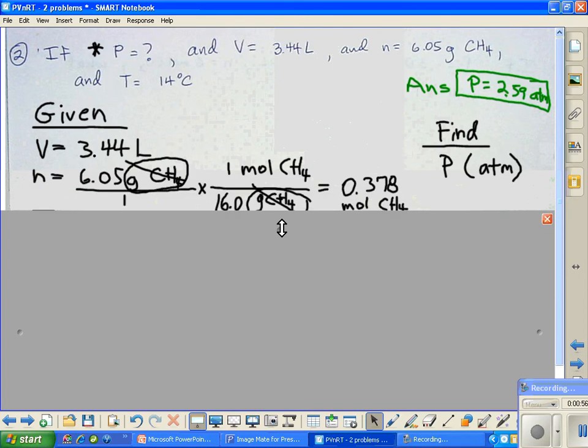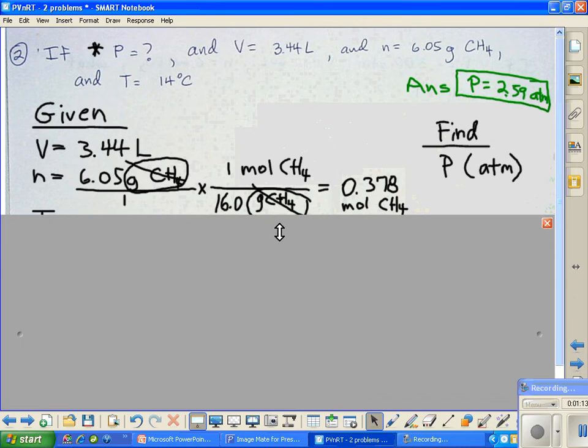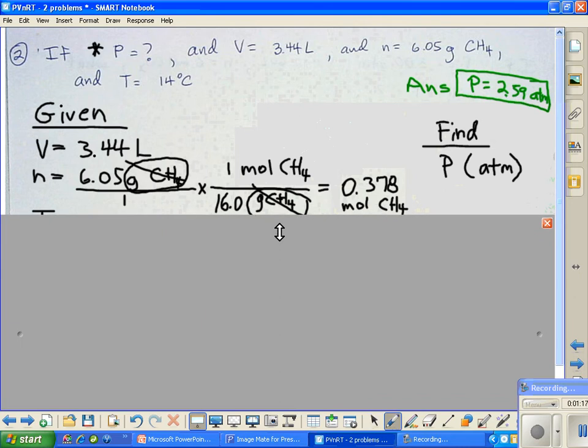However, when we get to moles, we're noticing that we got 6.05 grams of the methane. And what I've done is I've converted methane from grams into moles. And that allows us to use that number, the 0.378, my answer that you see right here. That answer will be used in the calculation.